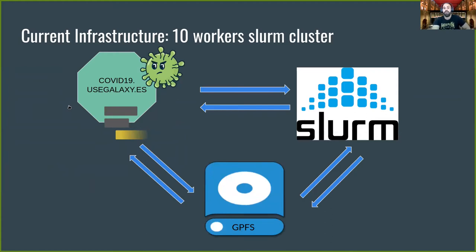Right now we have an infrastructure which consists in a small 10-worker cluster with 8 cores and 20 gigabytes of RAM for each worker. Both the workers and the Galaxy server have a common GBFS shared file system. This setup is okay for regular tasks but not for processing the non-stop increasing amount of SARS-CoV-2 samples data.